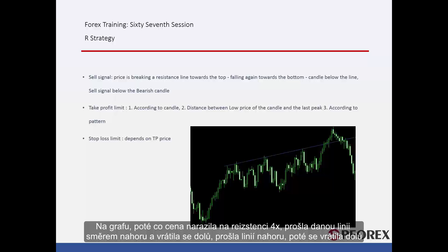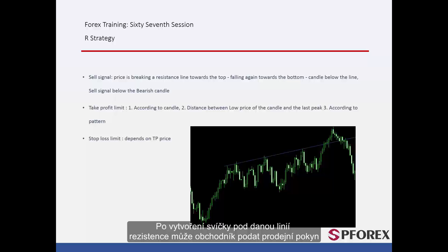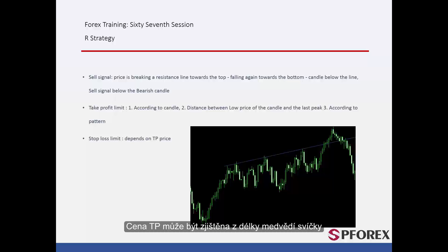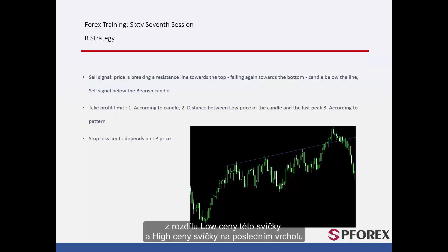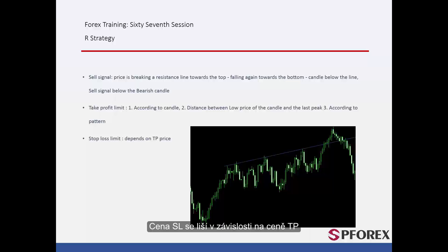On the graph, after the market price has hit the resistance line four times, it crossed the given line towards the top, then returned towards the bottom. As a candle formed under the given resistance line, a trader could place a sell order. TP prices could be determined by the bearish candle length, the distance between the low price of this candle and the high price of the candle on the last peak, and also a flag pattern in this area detectable in a shorter timeframe. SL price varied based on selected TP price.